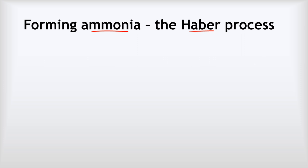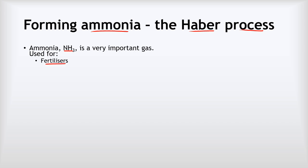Now we're going to look at how we form ammonia via a process called the Haber process, a really important application of reversible reactions and dynamic equilibrium. Ammonia, NH₃, is a super important gas used for making fertilisers. In fact, there are billions more people currently alive than would otherwise be the case because we can grow so much more food thanks to ammonia-based fertilisers. We can also use it to make explosives.